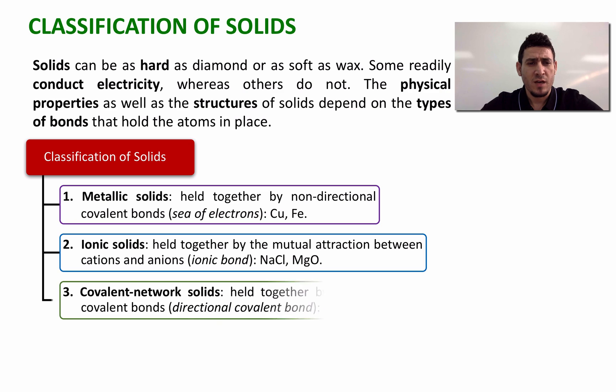The third type of solids is the covalent network solids, where the atoms or molecules are held together by an extended network of covalent bonds. This is called directional covalent bonding, and the best examples are networks formed from carbon and silicon.